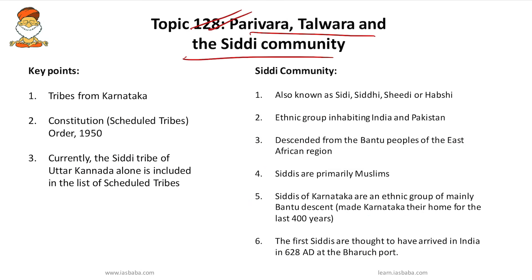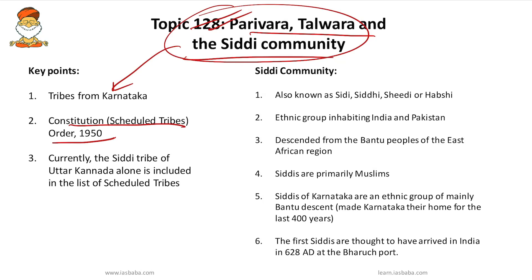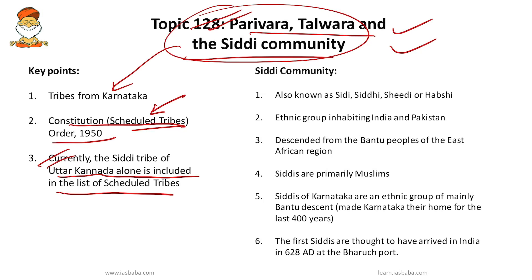The next topic is Parivara, Talwara, and the Siddhi community. These three communities are tribes from Karnataka, recently in the news because Rajya Sabha passed a bill to amend the Constitution Scheduled Tribes Order 1950 to include these three communities — especially from Dharwad and Belagavi districts — in the list of Scheduled Tribes in Karnataka. Currently, the Siddhi tribe of only Uttara Kannada alone is included in the Scheduled Tribes list.